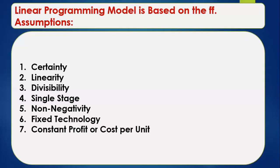When we say fixed technology, this means that production requirements are assumed to be fixed during the planning period. And finally, constant profits or cost per unit means that the profit contribution of a product remains constant irrespective of the level of production and sales.